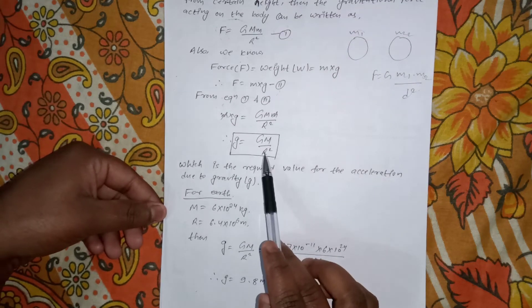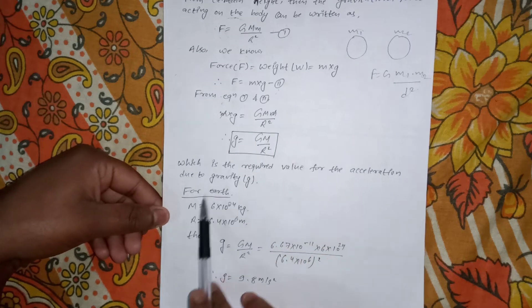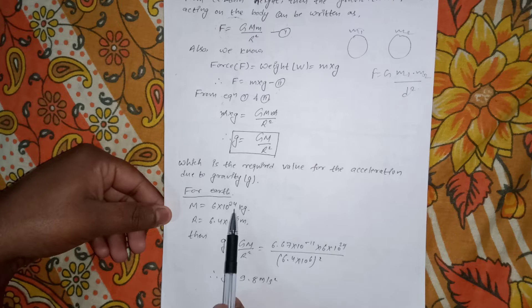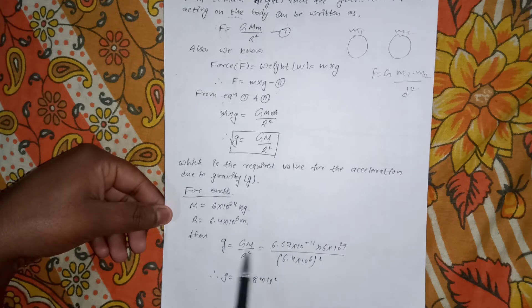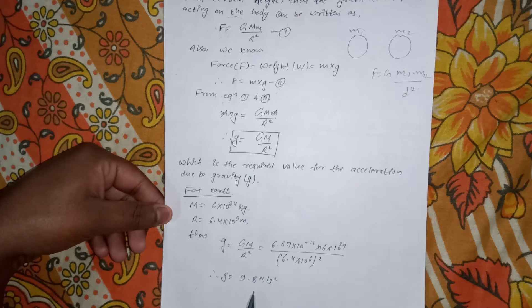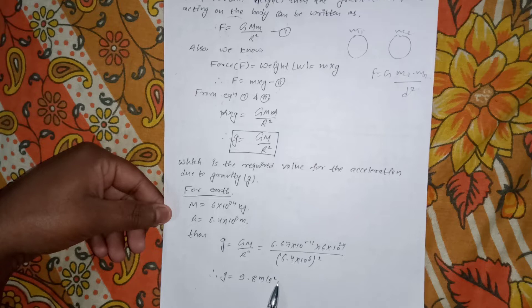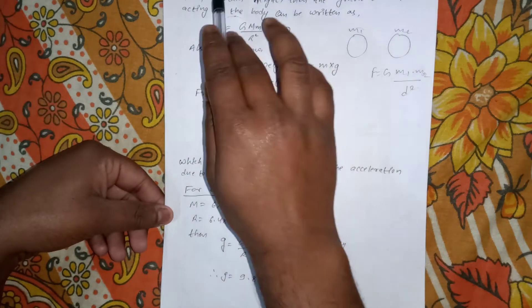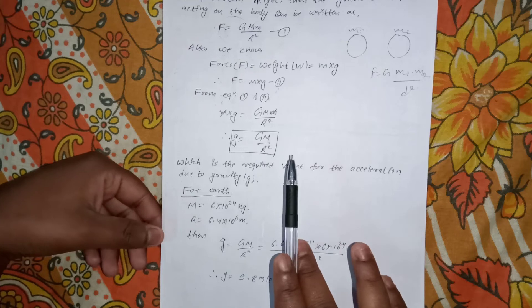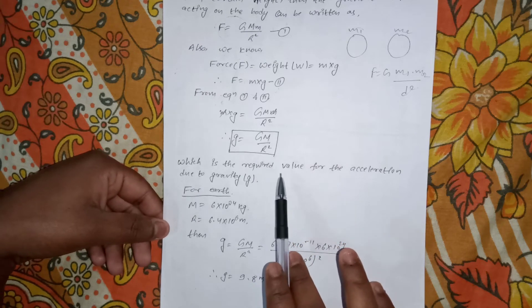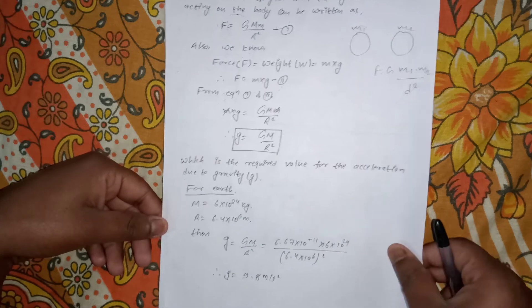Using this formula, we can calculate the value of acceleration due to gravity for Earth or any other planet if we know its mass and radius. For Earth, the mass is 6 × 10²⁴ kg and the radius is 6.4 × 10⁶ m. Substituting these values into g = G·M / R², we get g = 9.8 m/s², which is the value we use for numerical purposes. This was the derivation for the formula we need to remember.